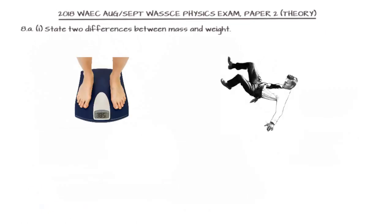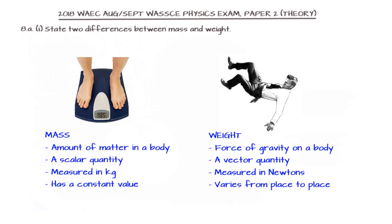This question asks us to state two differences between mass and weight. Mass is the amount of matter in a body — it is a scalar quantity measured in kilograms and has a constant value that does not vary from place to place. Weight is the force of gravity on a body — it is a vector quantity measured in newtons and varies from place to place depending on the acceleration due to gravity.